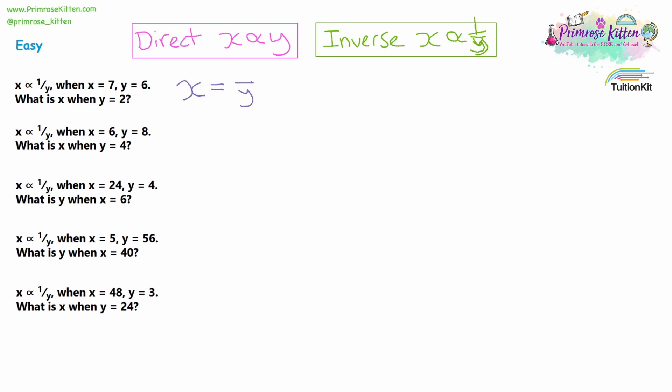We work this out in the same way as direct proportion. When x is directly proportional to y, we'd have x equals ky. But because this is inverse proportion, we want the 1 over y, so the constant k goes in the numerator. When x is inversely proportional to y, the equation is x equals k over y. We substitute in x equals 7 and y equals 6, giving us 7 equals k divided by 6. Multiplying both sides by 6, we get k equals 42.